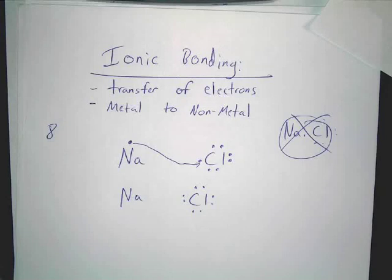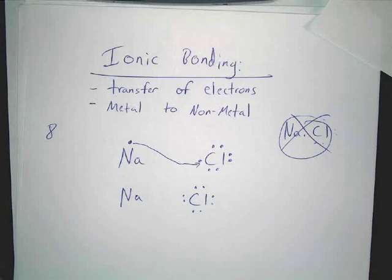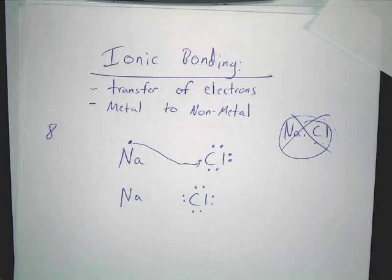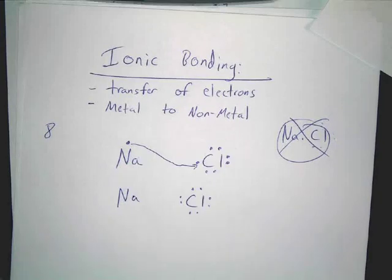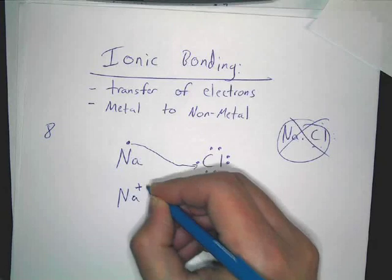What happened when we removed that electron? What did sodium become? It became more stable — it now has the electron configuration of neon. That's why it gets rid of the electron. But how would we describe it? What happened? You changed the electrons around — that makes it become an ion. That's the whole point: it's an ion. You remove a negative charge, what happens? It becomes positive.